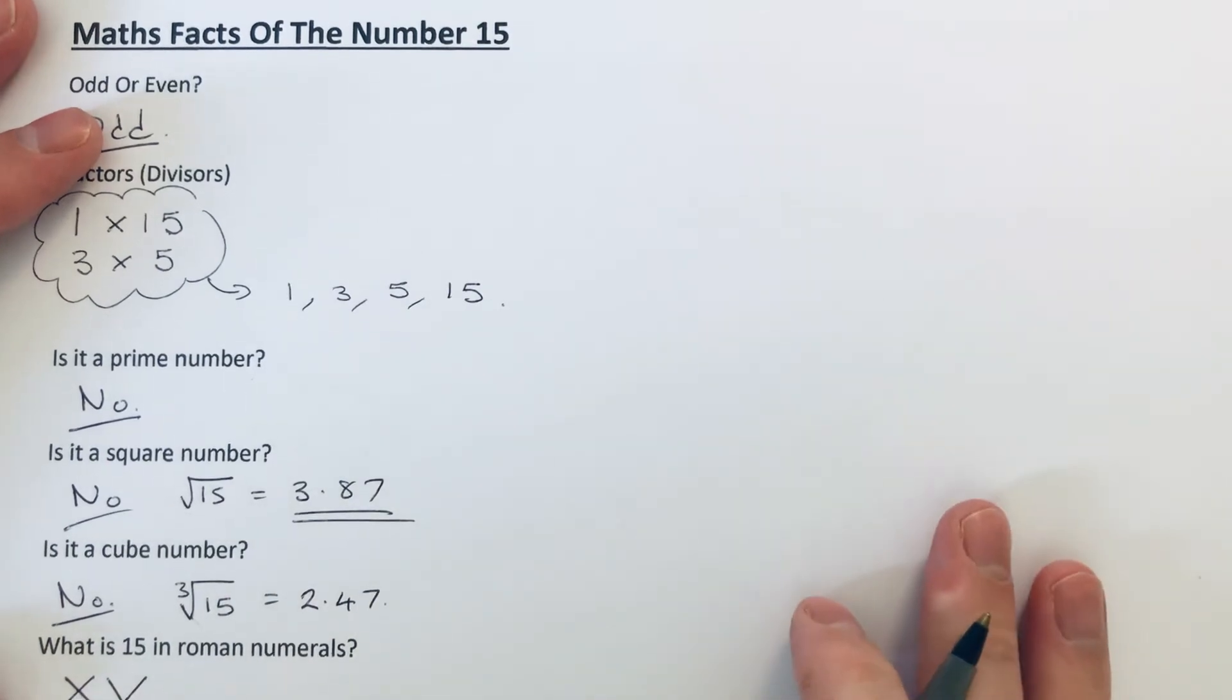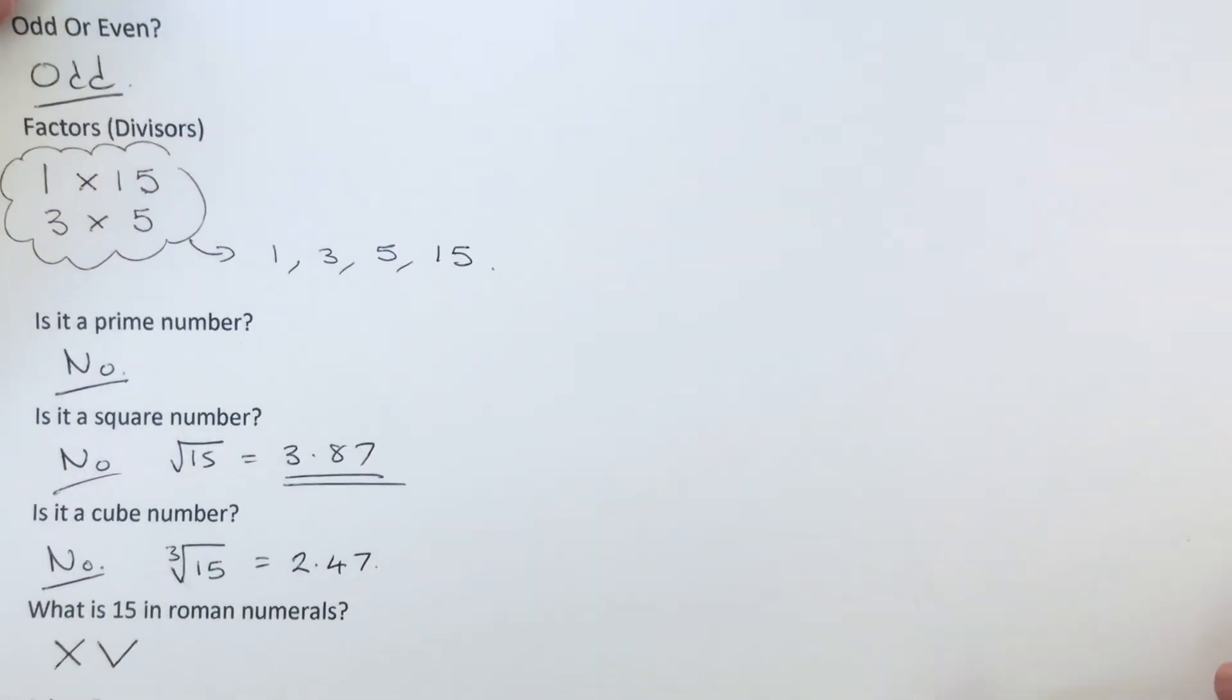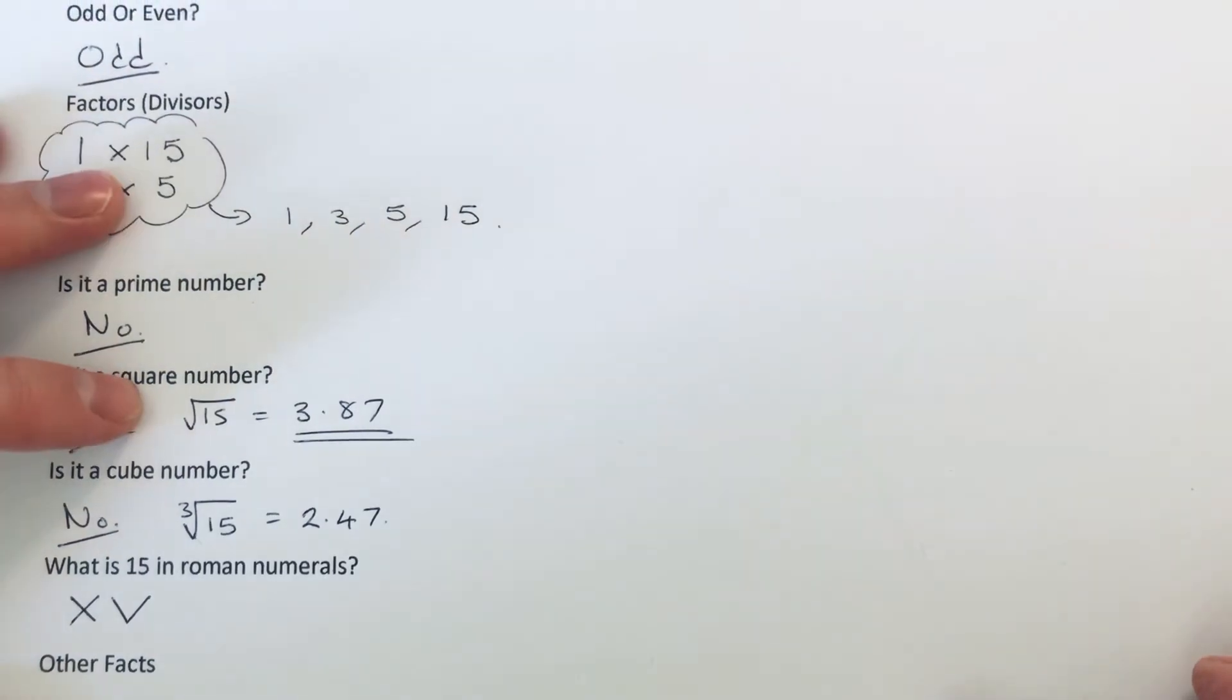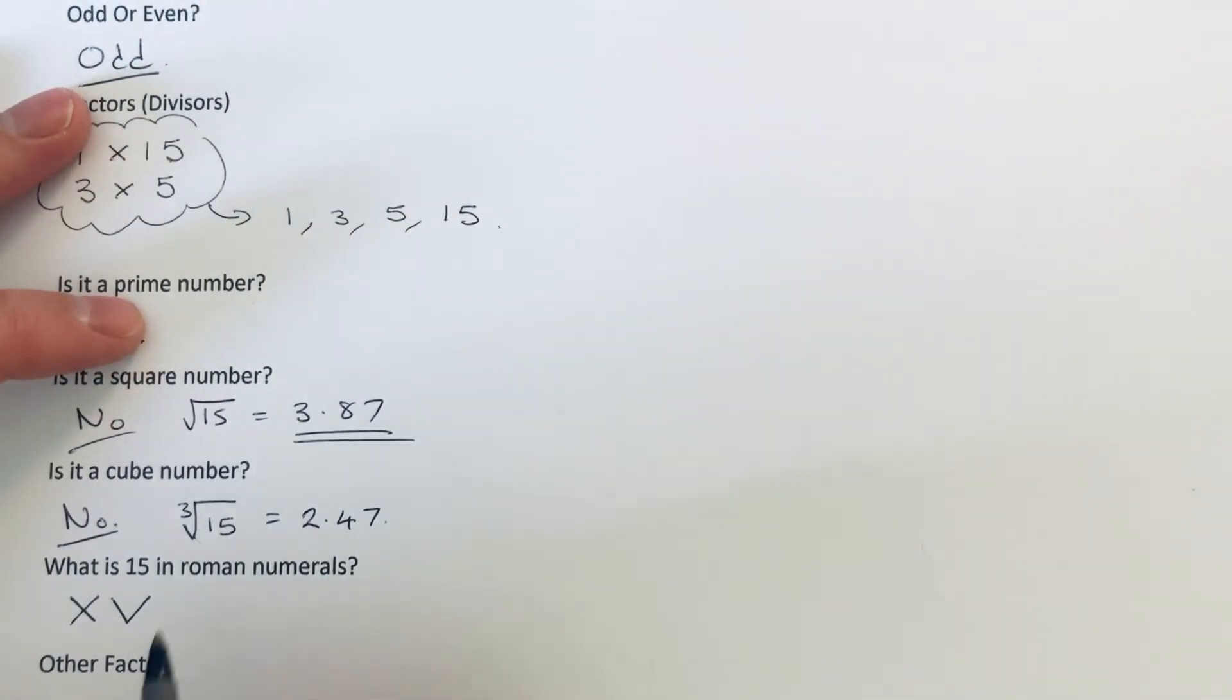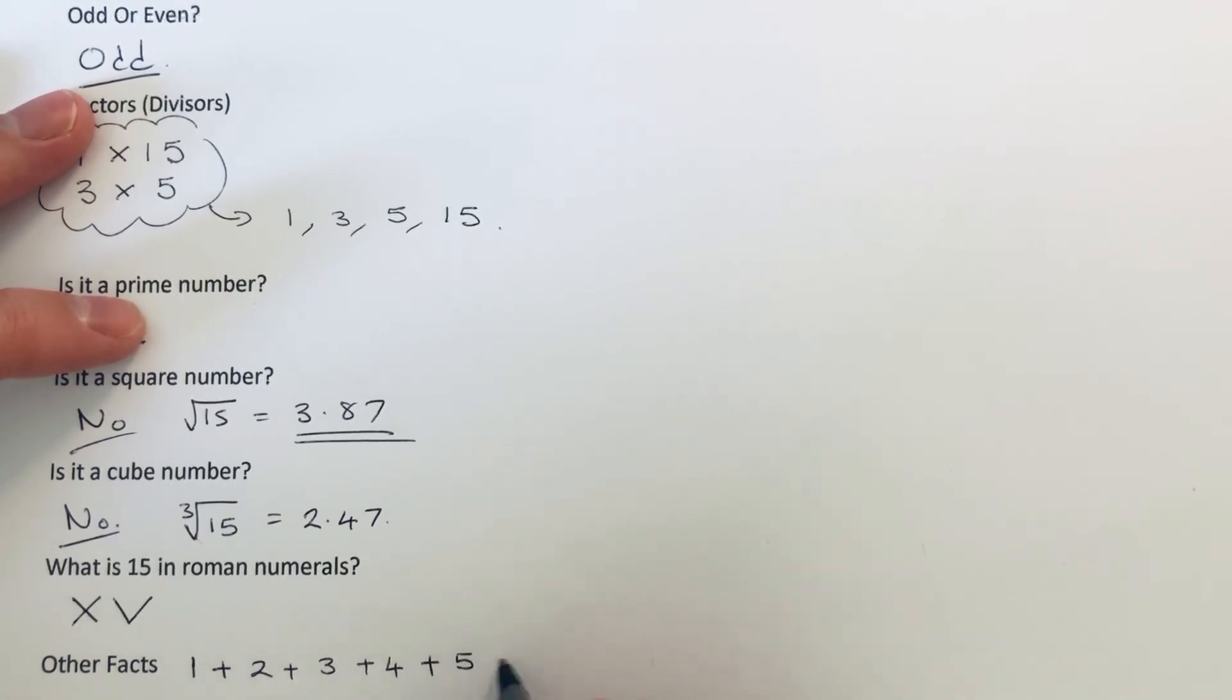What are the other properties of 15? We can write 15 as the sum of the first five integers: 1 + 2 + 3 + 4 + 5, and that all adds up to 15.